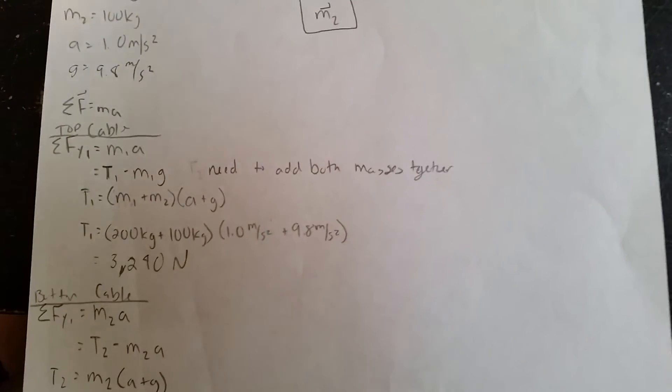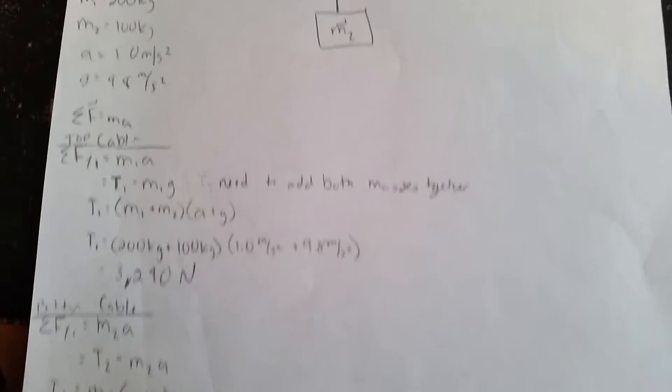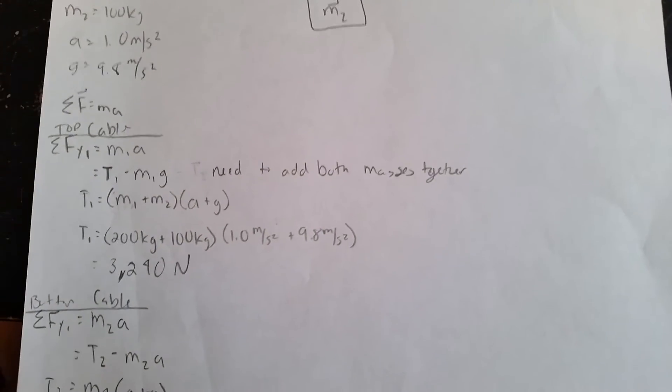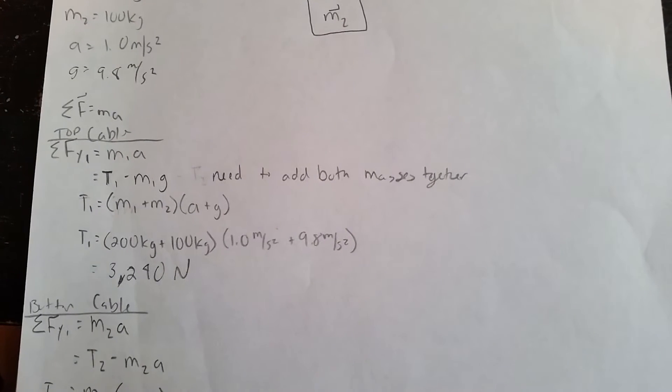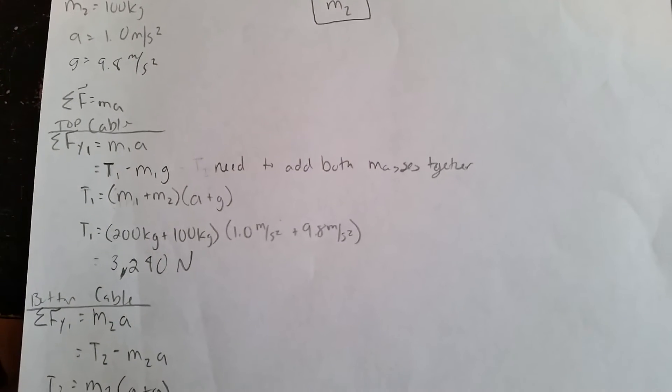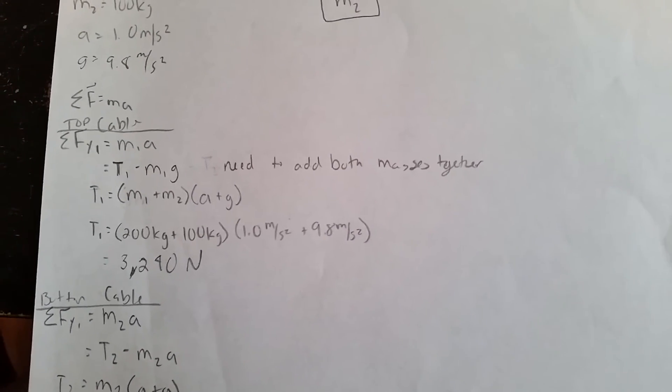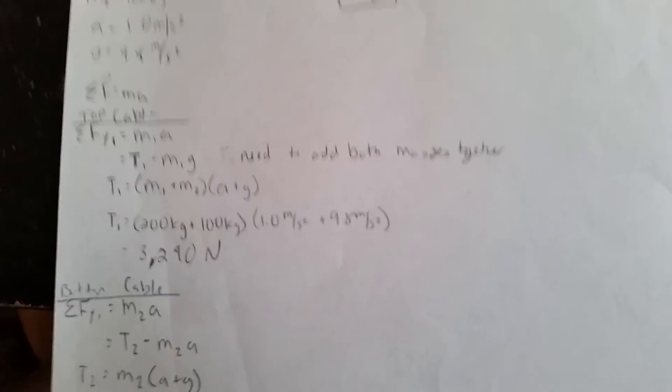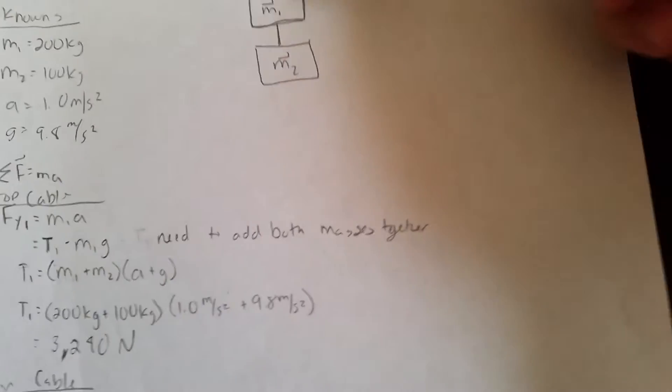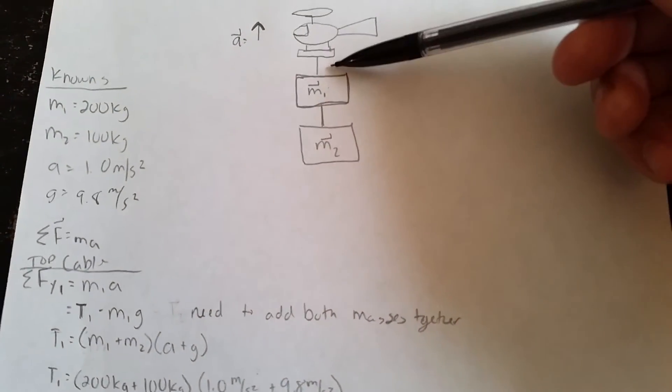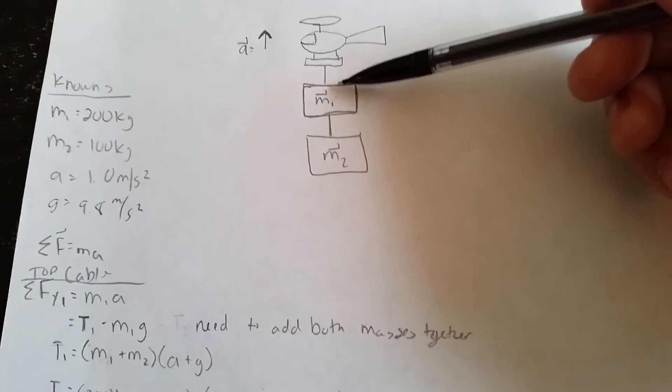I'm adding the acceleration plus the gravity because there are two forces that are acting on the objects. So I get 200 kilograms plus 100 kilograms, and I multiply that by 1.0 meters per second squared plus 9.8 meters per second squared, and it gives me 3240 newtons for the first tension.